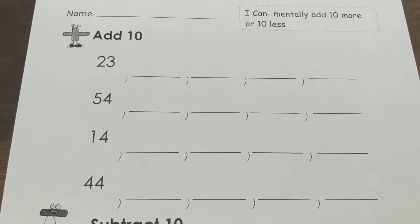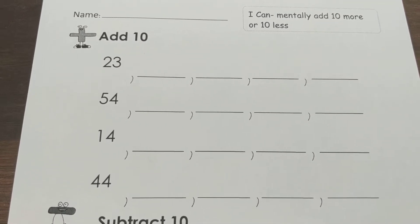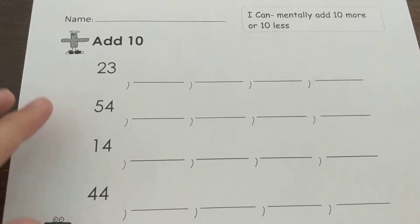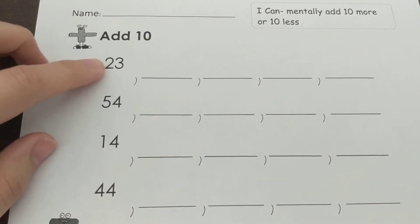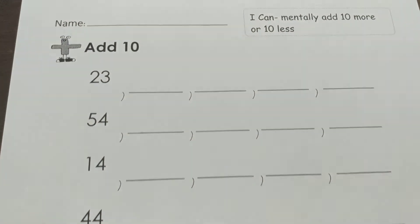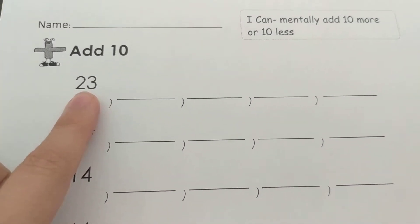If you need to go and use a 100s chart you can do that, but I want you to try to do it without. Remember when we add 10 all we have to do is change that 10's place. The 1's place stays the same. So your first number is 23.